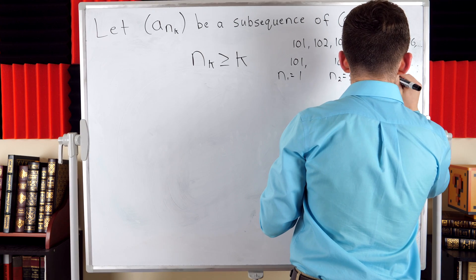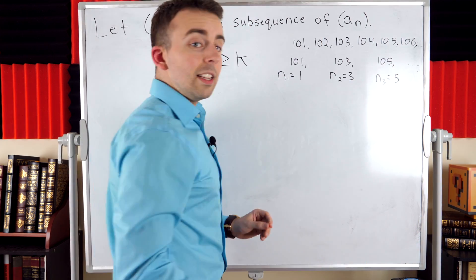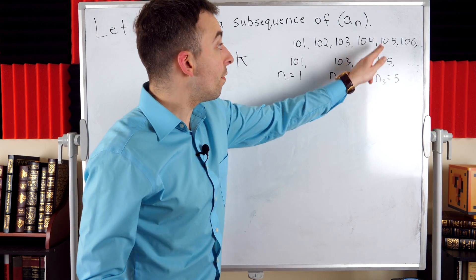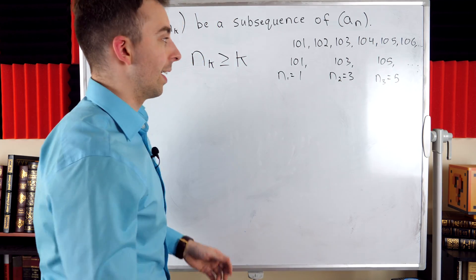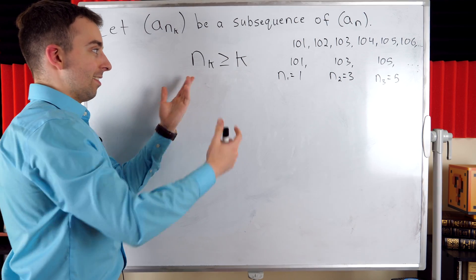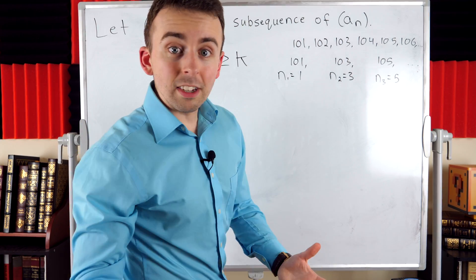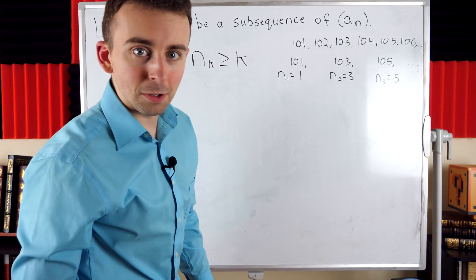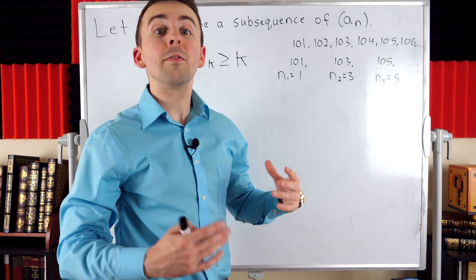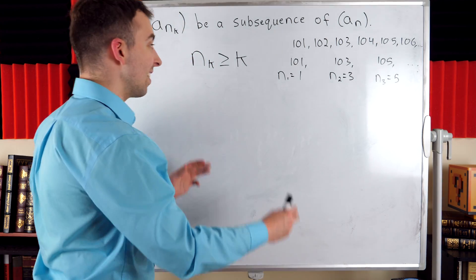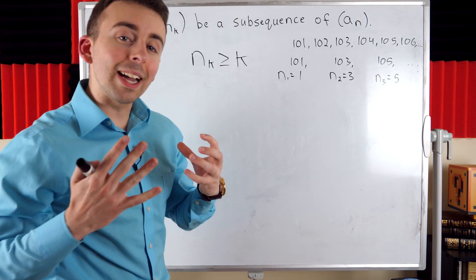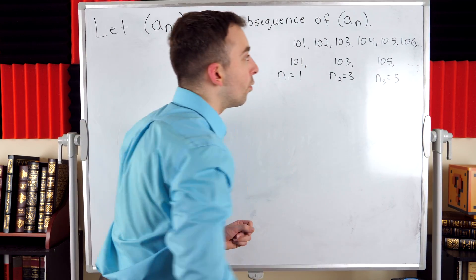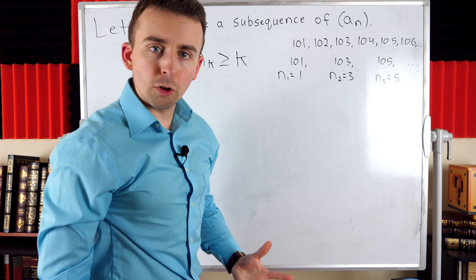If we look at the third term, n_3 equals 5, meaning the third term of our subsequence is the fifth term of the original sequence. The third term of the subsequence is at least three terms along — in fact five terms along. This is true because by definition of a subsequence, each term needs to be moving forward in the original sequence.